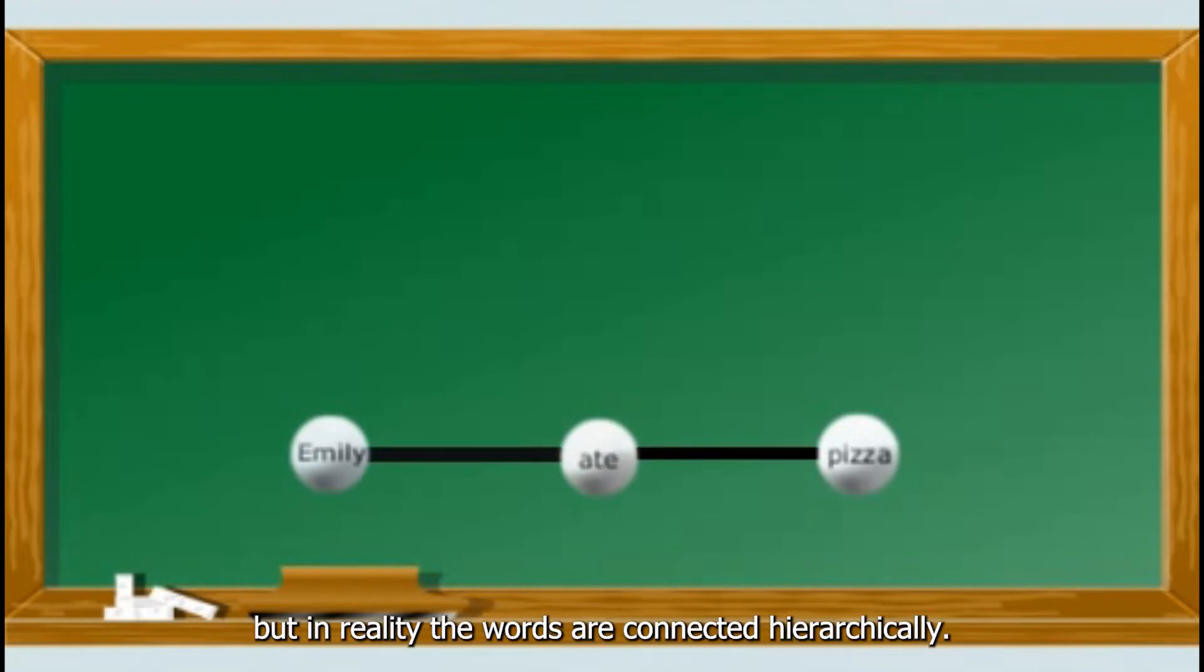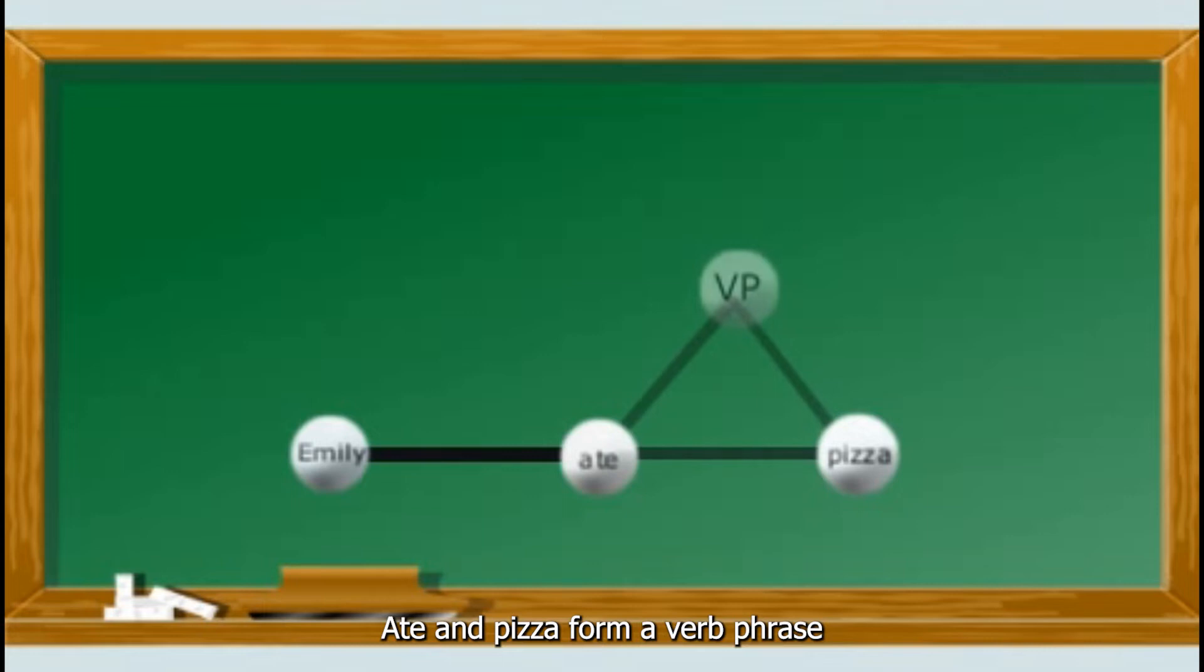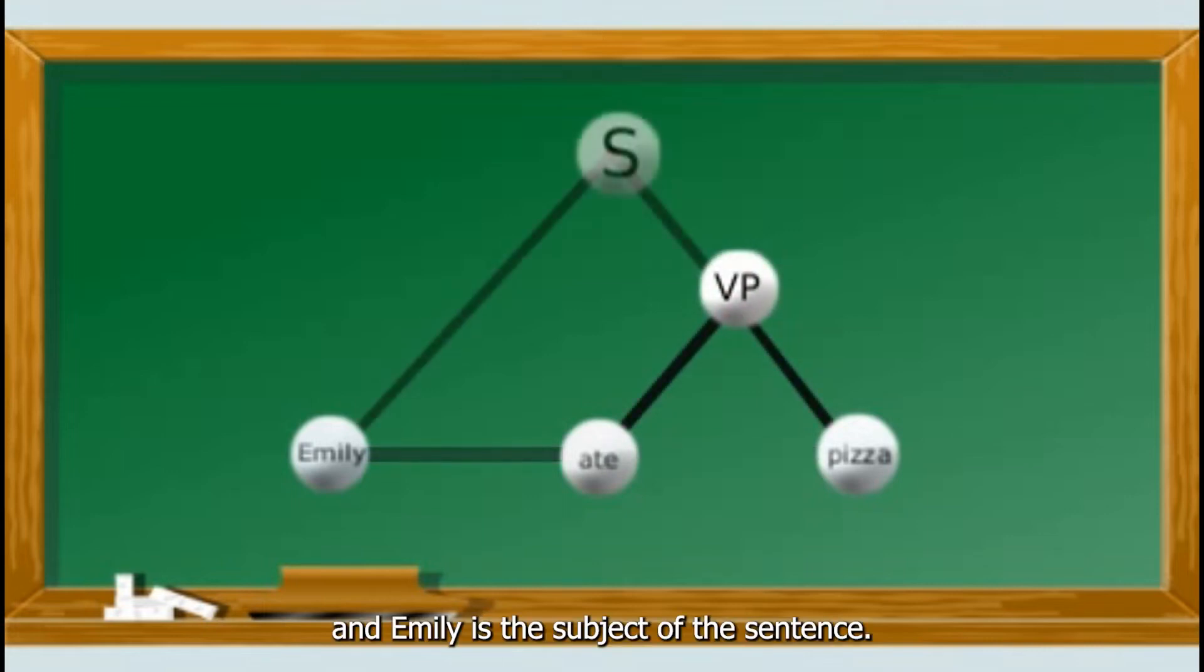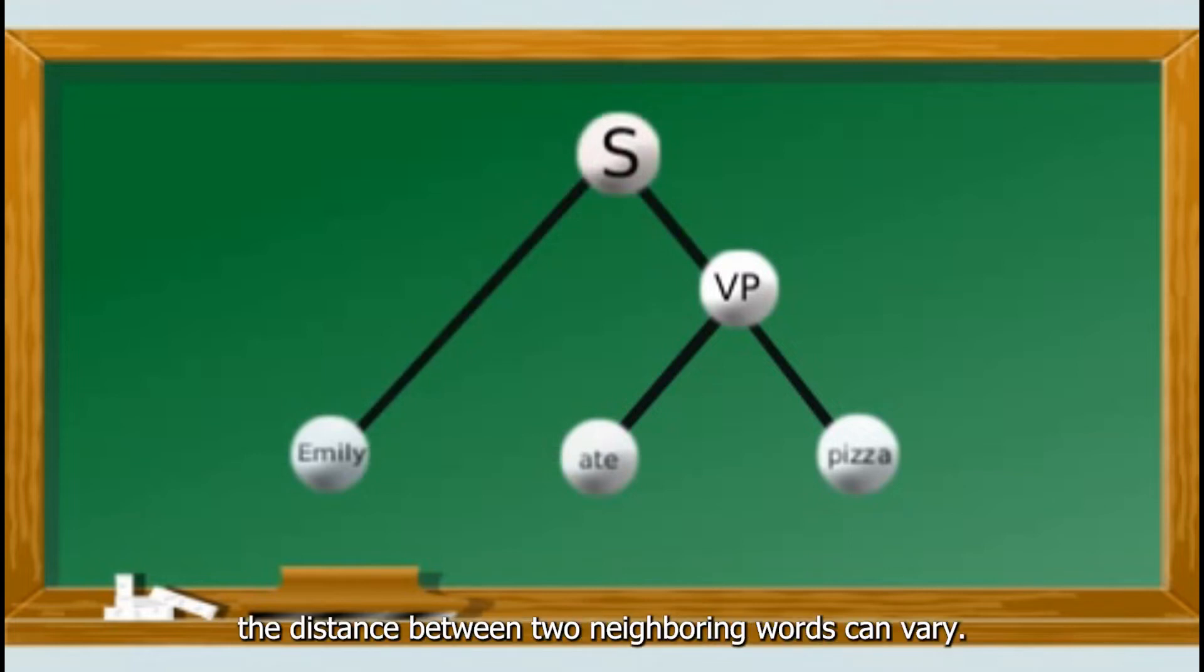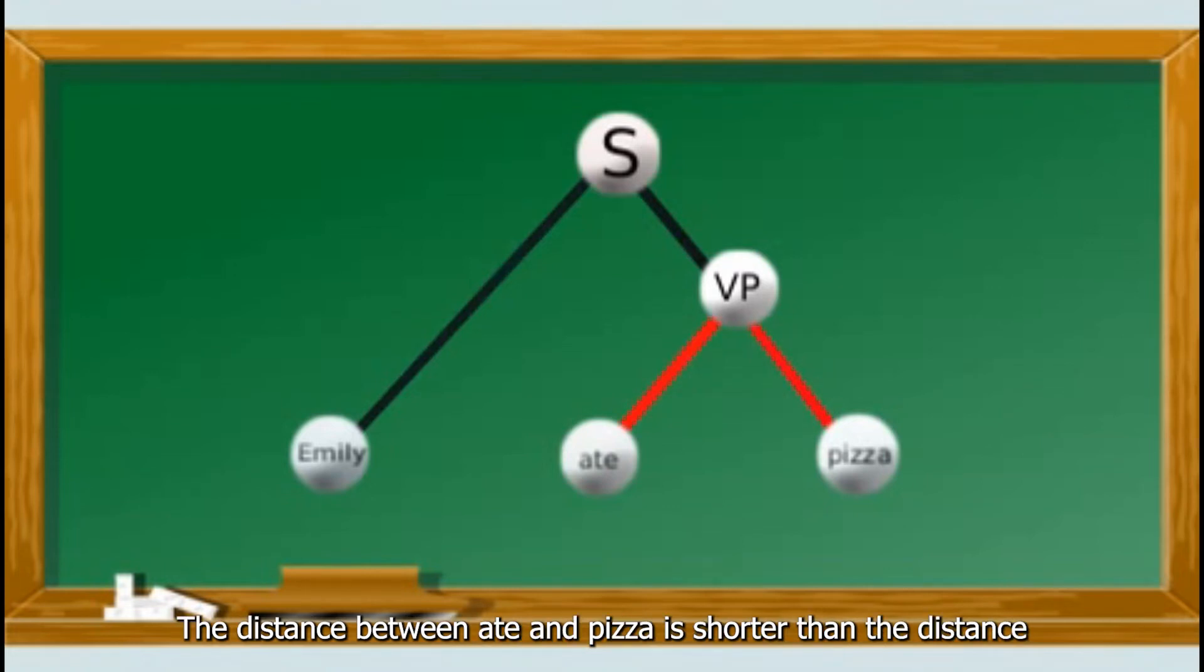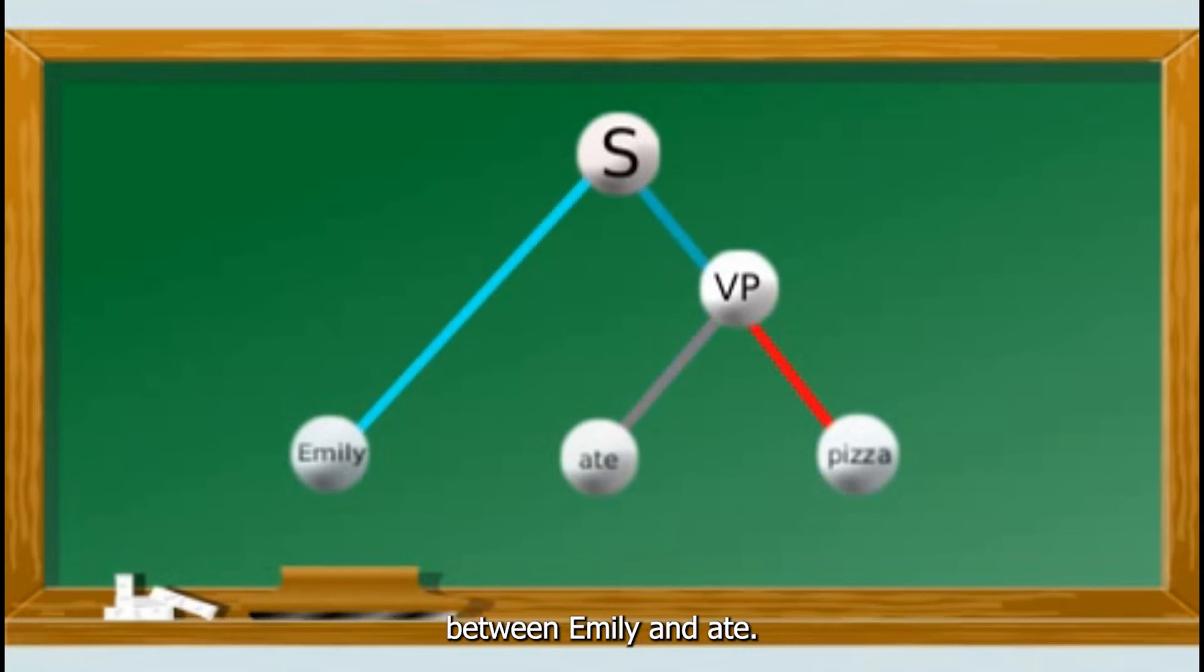But in reality, the words are connected hierarchically. 'Ate' and 'pizza' form a verb phrase, and Emily is the subject of the sentence. In hierarchical structure, the distance between two neighboring words can vary. The distance between 'ate' and 'pizza' is shorter than the distance between Emily and 'ate.'